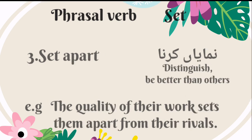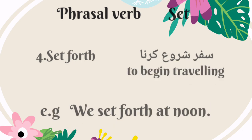The third phrasal verb is 'set apart.' It means to distinguish or be better than others — Urdu mein is ka matlab hai namaya karna ya hona. For example: the quality of their work sets them apart from their rivals. The fourth phrasal verb of set is 'set forth.' It means to begin traveling — Urdu mein is ka matlab hai safar shuru karna. For example: we set forth at noon.